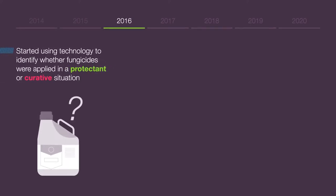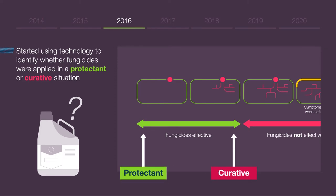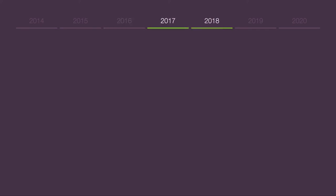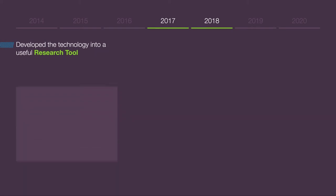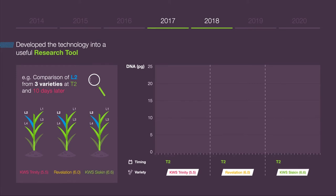In 2016, we started to use this technology in trials to identify whether fungicides were being applied in a protectant or curative situation. Over the following two years in 2017 and 2018, we expanded our trials and developed the technology into a research tool. One example of what we did was to compare the quantity of septoria DNA in visually clean leaf 2s at the T2 timing in three different varieties with a range of septoria resistance ratings, from Trinity with a rating of 5.5, to Revelation at 6.0, up to KWS Siskin with a rating of 6.6.